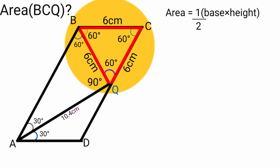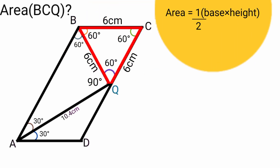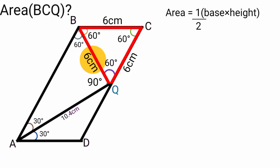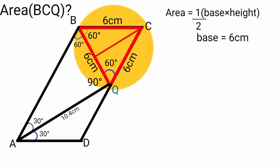To find the area of triangle PCQ, we use area equals half base times height. Since the triangle is equilateral we can take any side as the base, so we take line BQ as the base, giving base equals 6 centimeters. To find the height, we draw a perpendicular line from the apex to the base, and since the height is always perpendicular to the base, this forms a right angle.